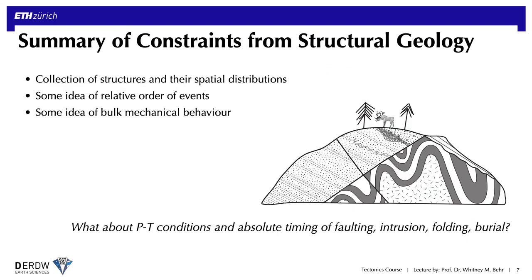To summarize, the tool of structural geology applied to tectonics allows us to identify a collection of structures and their spatial distributions that define tectonic domains, provides a relative order of deformation events that may reflect changing tectonic conditions, and provides both qualitative and quantitative information on the rheology or bulk mechanical behavior of material entrained by some tectonic process. This leaves us wanting to know the pressure-temperature conditions of different deformation events, as well as their absolute timing and durations — and that's where the tools of metamorphic petrology and geochronology come into play, as discussed in the next video segments.